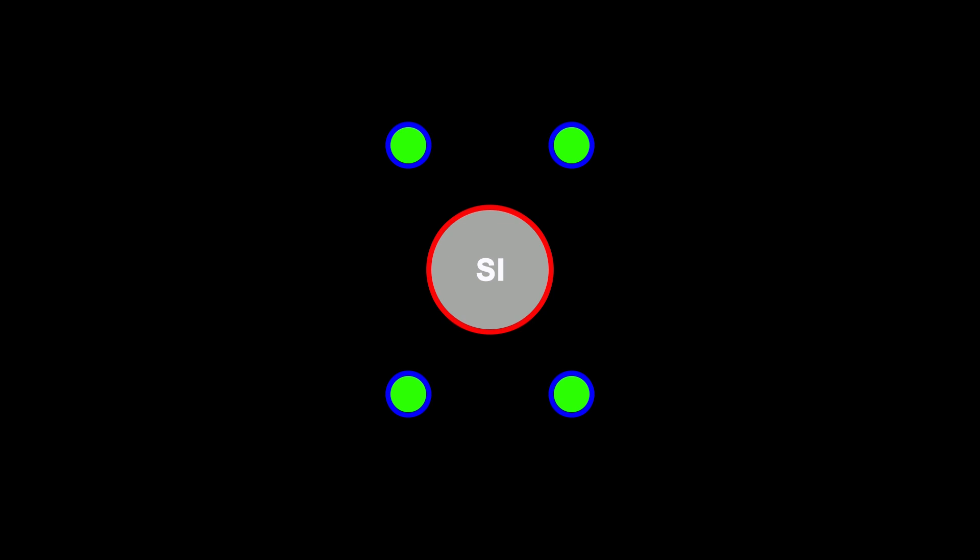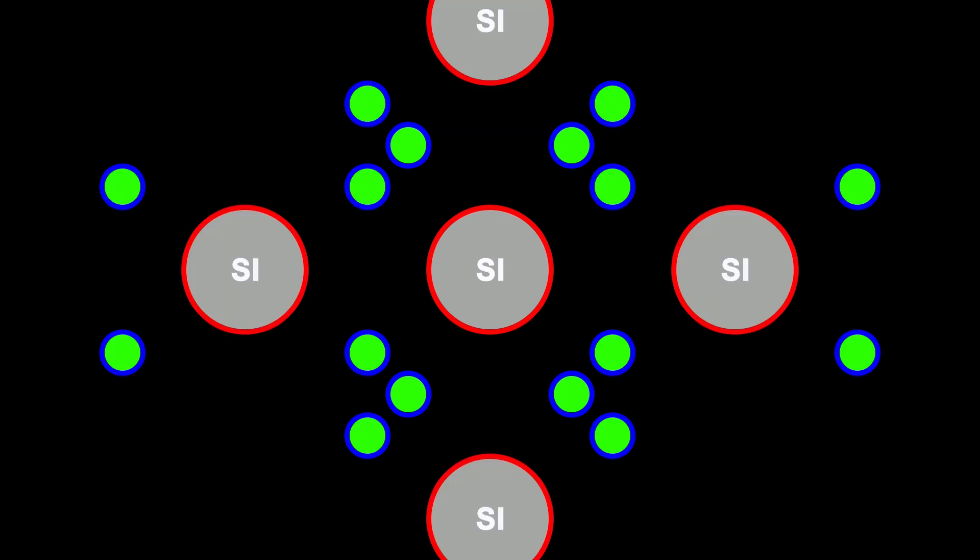Now if we add in a few more silicon atoms around the outside of the original atom you can see that the silicon atom forms four covalent bonds with the four neighboring atoms. In covalent bonding each outer electron is shared by two atoms. What this means is that all of the outer electrons are tightly bound to the nucleus of the atoms because of the sharing of electrons with neighboring atoms.